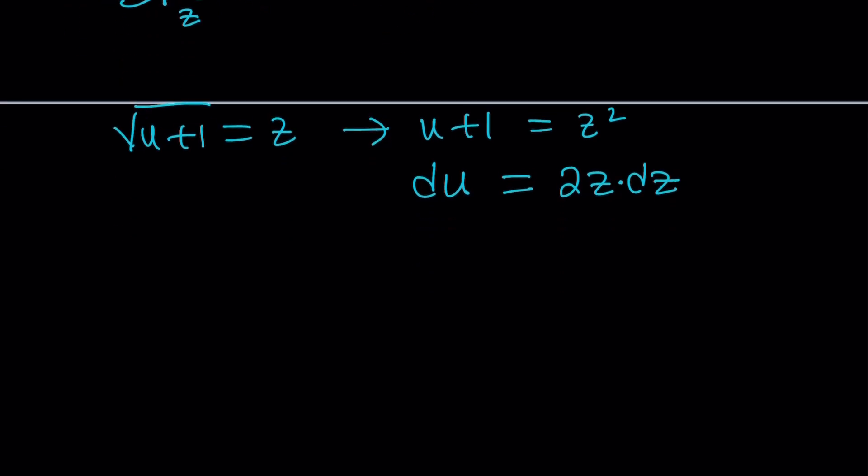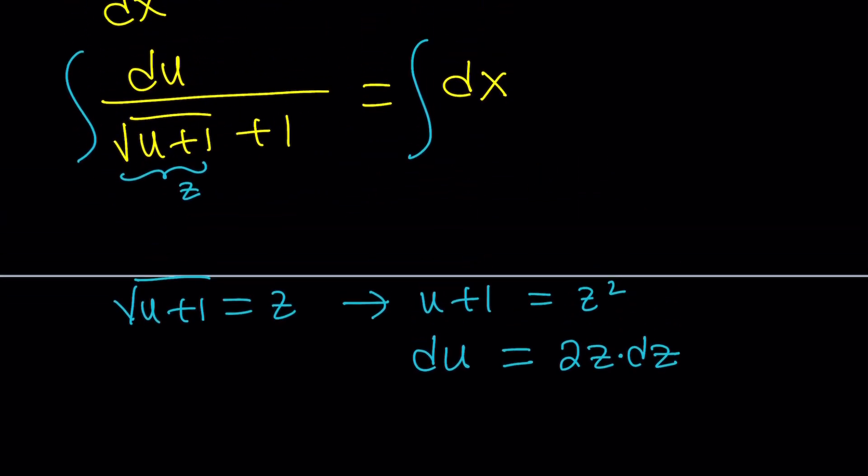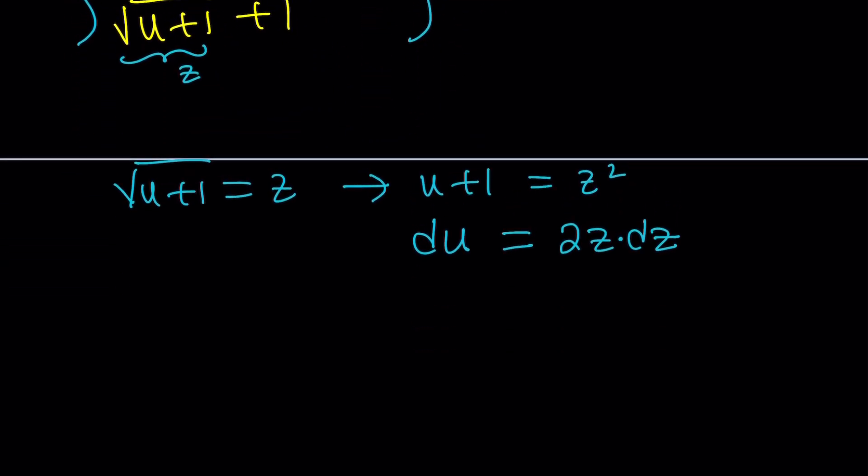2z dz. So, how do you do the d of z squared? You basically differentiate z squared and then multiply by dz. Make sense? Now, let's go ahead and do the substitution. Replace square root of u plus 1 with z. That gives us z. And du, of course, will be replaced with 2z dz. So, it's going to be like this. 2z dz divided by z plus 1. Awesome.